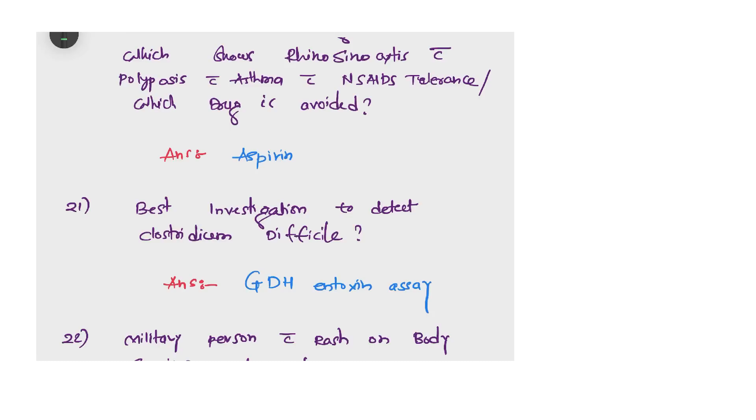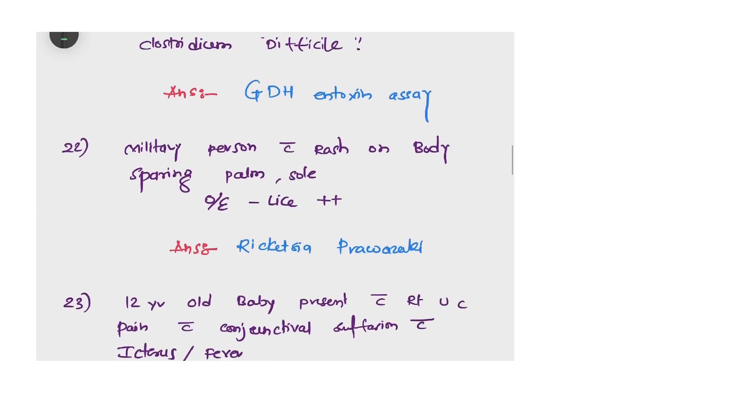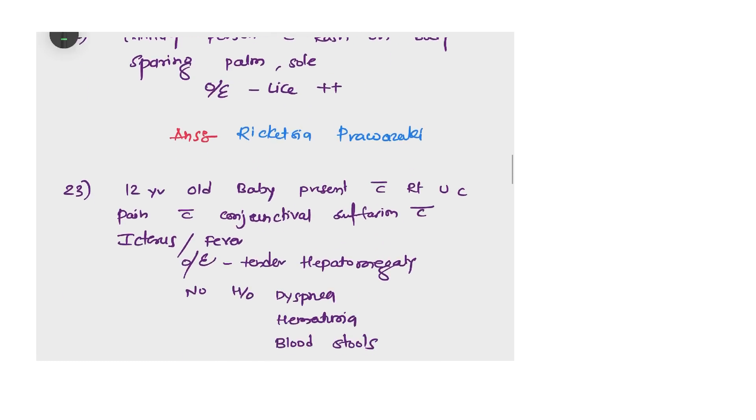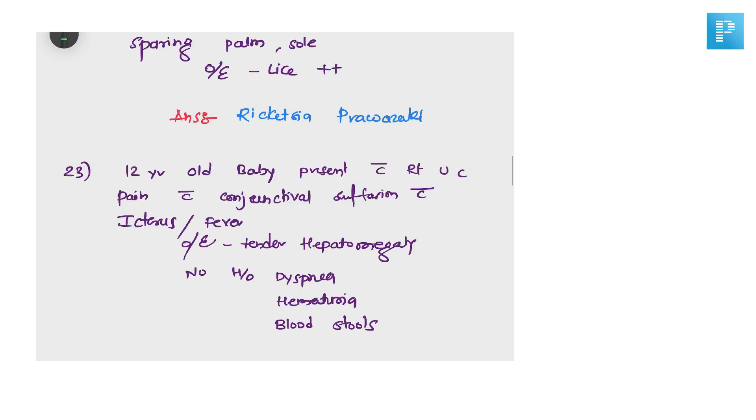Next question: Samter's triad was given, which shows rhinosinusitis with polyposis with asthma and NSAID intolerance. Which drug is avoided? The answer is aspirin. The next question: best investigation to detect Clostridium difficile? Answer is GDH and toxin assay. Next question: military person with rash on body sparing palm and sole, on examination there is presence of lice. What is the answer? Yes, Rickettsia prowazekii.